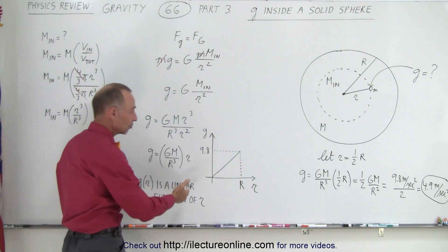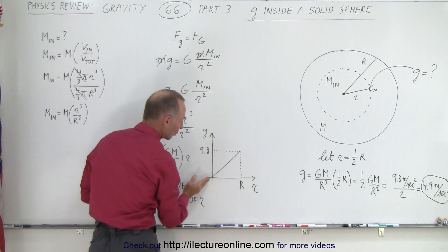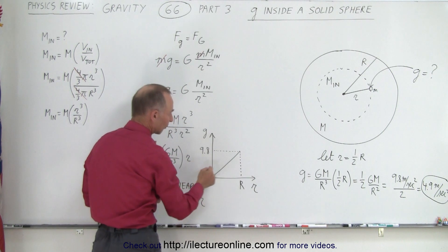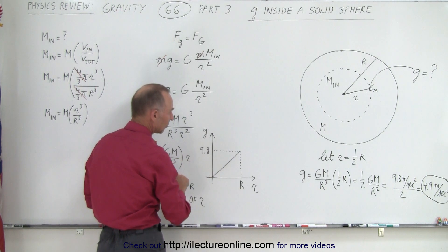And so we can see that if we draw that, you can see the gravity would be zero on the inside, 9.8 at the surface, and there would be a linear relationship. So therefore, when you're halfway down, the acceleration of gravity should be half 9.8.